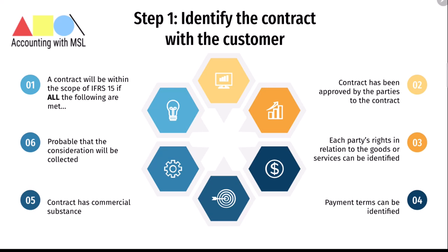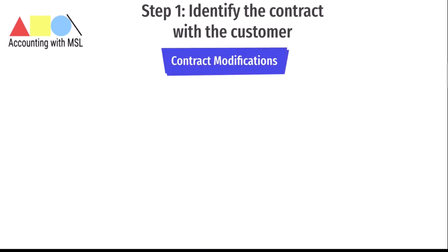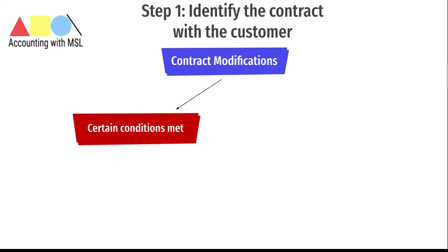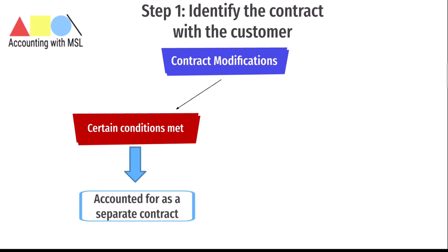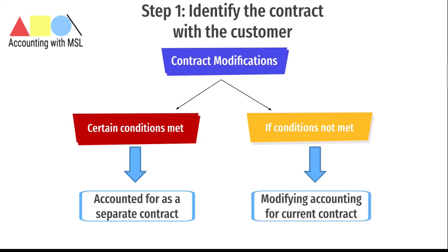IFRS 15 also has rules on contract modifications. If certain conditions are met, a contract modification will be accounted for as a separate contract with the customer. If not, it will be accounted for by modifying the accounting for the current contract. Whether the modification is accounted for prospectively or retrospectively would depend on whether the remaining goods or services to be delivered after the modification are distinct from those delivered prior to the modification.